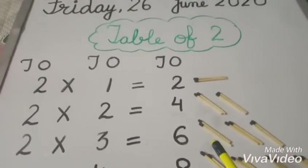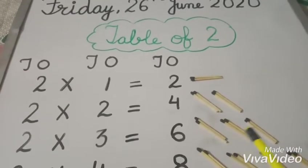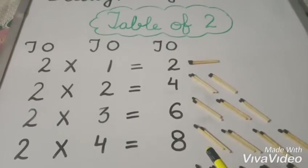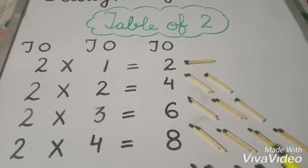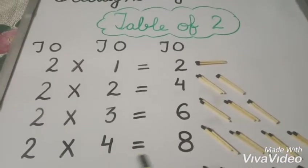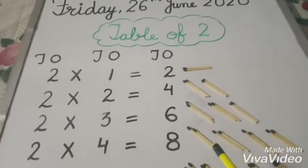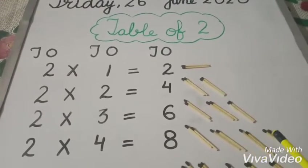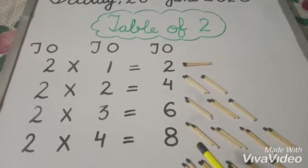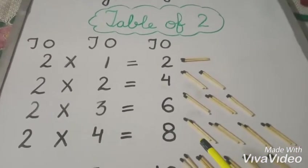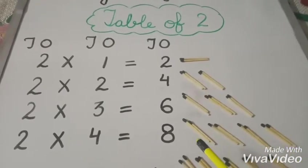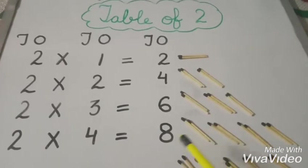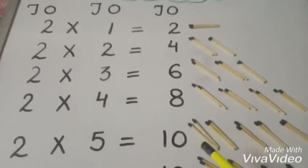When you take two three times, you will get two three's a six. Just like this, when you take two four times, you will get two four's a eight. You can count these sticks: one, two, three, four, five, six, seven, eight — and you will say two fours a eight, the total number is eight.